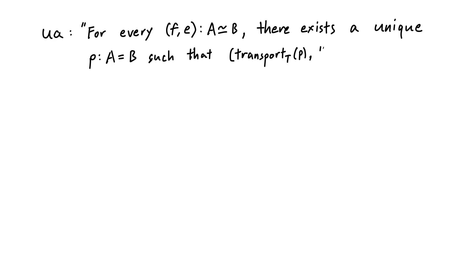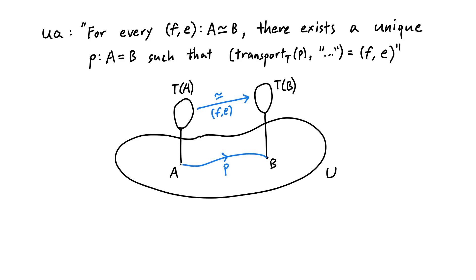Alright, we have finally collected all the pieces needed to give the precise statement of the univalence axiom. It asserts that, for every equivalence (f, e) of types in U, where f is the underlying function, and e is the proof that f is an equivalence, there exists a unique path, such that the transport function along that path with the proof that transport's an equivalence is equal to (f, e). We can package the data that transport's an equivalence into the function id2equiv. Then, the univalence axiom simply states that id2equiv is an equivalence. It fits right here, proving the iconic result that A equals B is equivalent to A is equivalent to B.